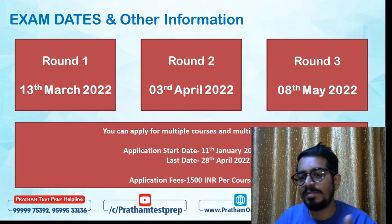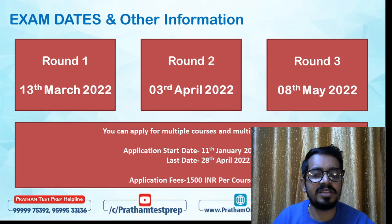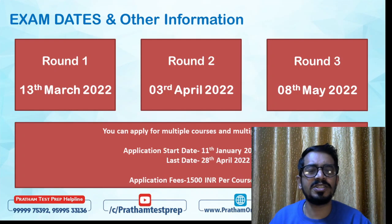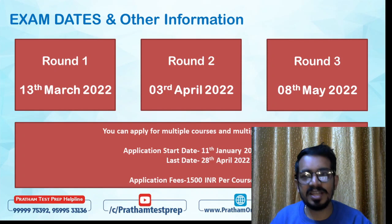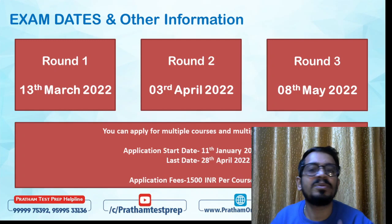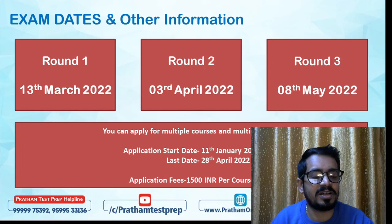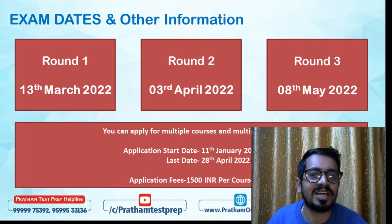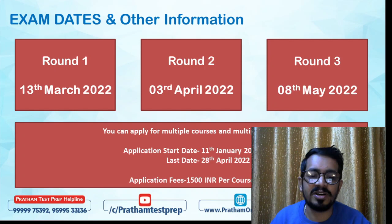For example, if I want to do BBA Law and BBA Finance and International Business, I can apply for BBA Law in the March cycle and BBA Finance in the May cycle. Similarly, if my main interest is Psychology Honours, I can attempt in March and if I don't clear it, I can apply again for a later date with the same form. This is how you can choose your date of examination.